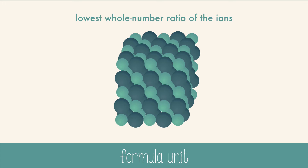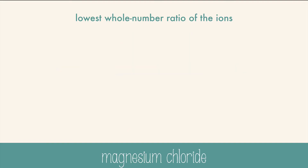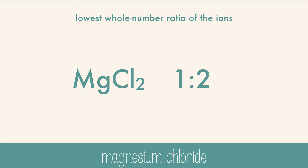The ratio for sodium chloride is a 1 to 1 ratio of sodium to chlorine. But in a different ionic compound, like magnesium chloride, the ratio of magnesium to chlorine is 1 to 2. The subscripts help tell you about the ratio.